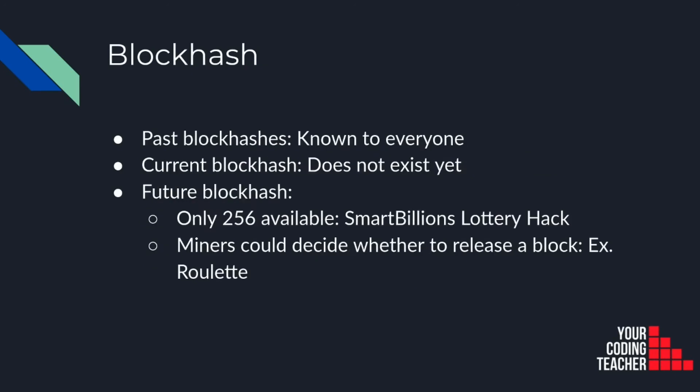Now let's see block hashes. Block hashes are used to create the chain of blocks. Each block has a reference to the block hash of its parent, all the way down to the very first block in the chain, usually called the genesis block. We'll see why you cannot use past, current, or future block hashes. Past block hashes are known to everyone, and they could be used in contracts to know what's going to happen. The hash of the current block is generated after all transactions are added to the block and the block is mined, which means it does not exist at the time the contract is running, so we cannot even use it.